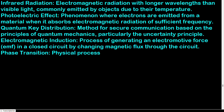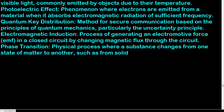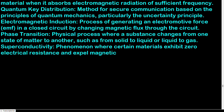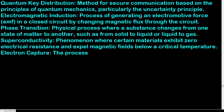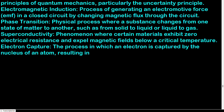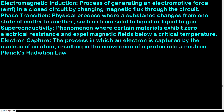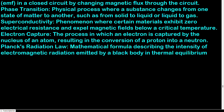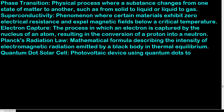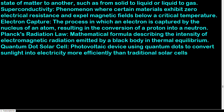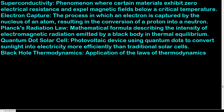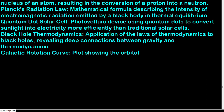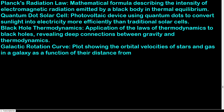Phase transition: physical process where a substance changes from one state of matter to another, such as from solid to liquid. Superconductivity: phenomenon where certain materials exhibit zero electrical resistance and expel magnetic fields below a critical temperature. Electron capture: the process in which an electron is captured by the nucleus of an atom, resulting in the conversion of a proton into a neutron. Planck's radiation law: mathematical formula describing the intensity of electromagnetic radiation emitted by a black body in thermal equilibrium. Quantum dot solar cell: photovoltaic device using quantum dots to convert sunlight into electricity more efficiently than traditional solar cells. Black hole thermodynamics: application of the laws of thermodynamics to black holes, revealing deep connections between gravity and thermodynamics. Galactic rotation curve: plot showing the orbital velocities of stars and gas in a galaxy as a function of their distance from the galactic center.